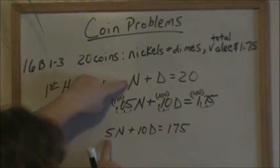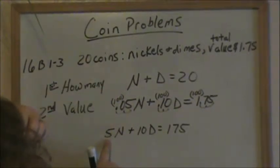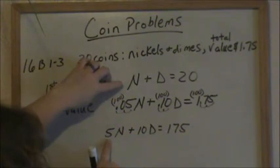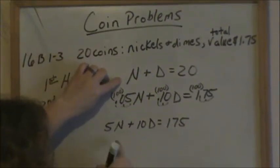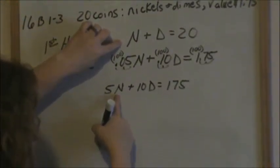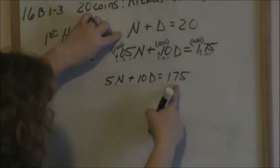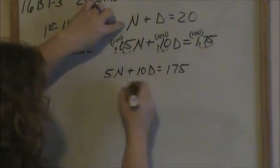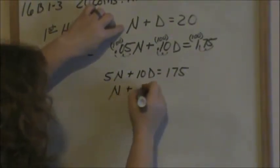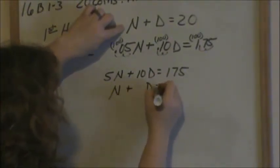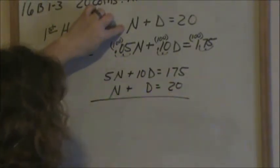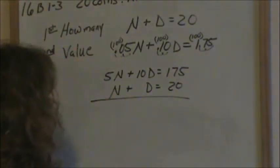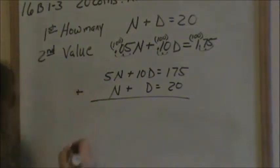Now we have our first equation: n plus d equals 20. We're going to solve these two equations by elimination. When we use elimination, both equations need to be in standard form. This one is in standard form, and n plus d equals 20 is already in standard form as well. When we do elimination, we stack our equations on top of each other and add them together.